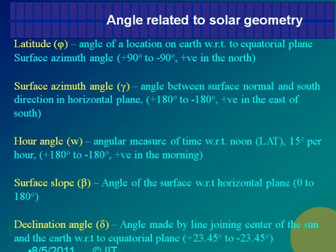The sun moves 15 degrees in one hour. If I consider noon time as 0 hour angle, then 1 o'clock is 15 degrees and 2 o'clock is 30 degrees. The hour angle represents time in terms of angle because all calculations here talk about angles. Therefore, time is also converted into angles.